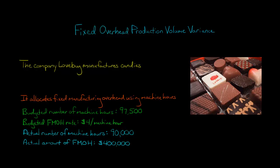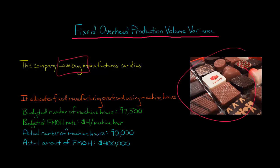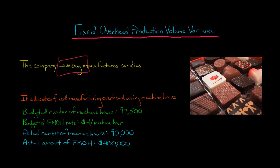In this video, we're going to discuss how to calculate the fixed overhead production volume variance. The company Lovebug manufactures candies, and they allocate fixed manufacturing overhead costs using machine hours. That doesn't have to be the activity base — they could use direct labor hours or something else — but let's just say it's machine hours.